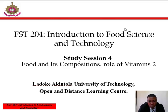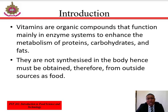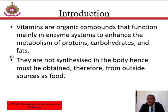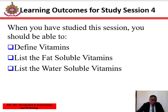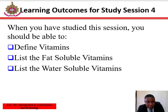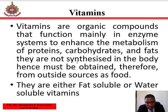Welcome to study session 4, where we're discussing food, its components, and roles of vitamins. Vitamins are organic compounds that function mainly in enzyme systems to enhance metabolism of protein, carbohydrates and fat. They are not synthesized by the body and must be obtained from outside sources of the food we consume. When you have studied this session, you should be able to define vitamins and list the fat-soluble vitamins and also the water-soluble vitamins.